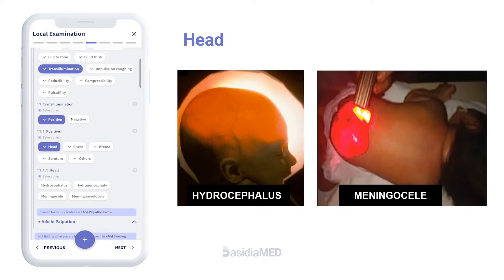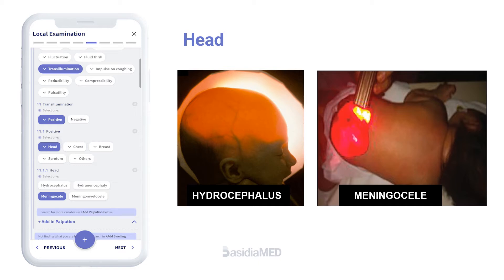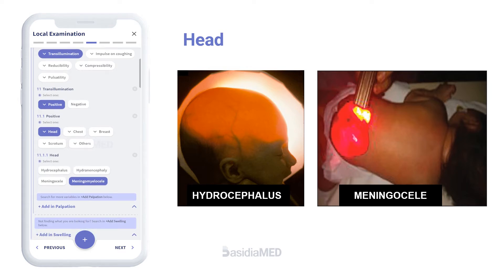Head swellings that transilluminate include hydrocephalus, hydranencephaly, meningocele, and meningomyelocele. Inflammatory swellings may also show transillumination since they are filled with plasma. However, solid tumors and swellings containing blood are not positive for transillumination.